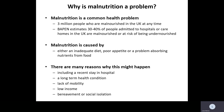So why is malnutrition a problem? Malnutrition is very common and a common health problem. In the UK, there are 3 million people estimated to have malnutrition at any one time. The British Association of Parenteral and Enteral Nutrition estimates between 30 and 40 percent of people admitted to hospital or care homes in the UK are malnourished or at risk of becoming undernourished.